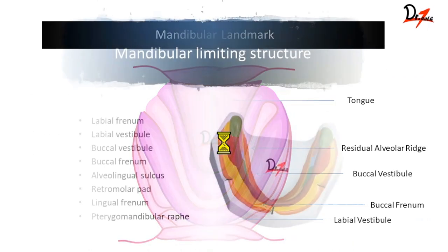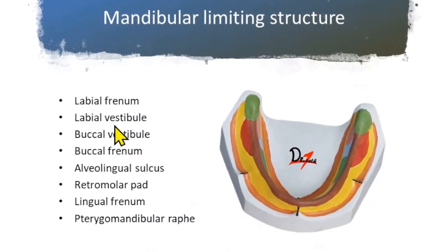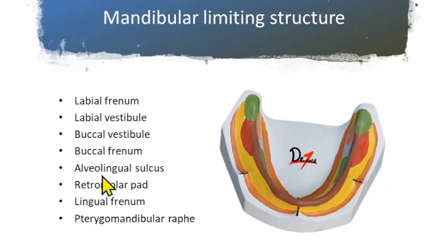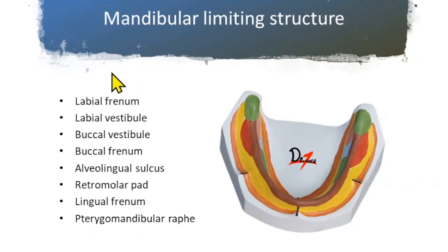First we'll study limiting structures in detail. These include labial frenum, labial vestibule, buccal vestibule, buccal frenum, and alveolingual sulcus. This light brown area is your alveolingual sulcus. Also included are retromolar pad — this green area is the retromolar pad — lingual frenum, and pterygomandibular raphe. We'll be studying all these limiting structures in detail now.